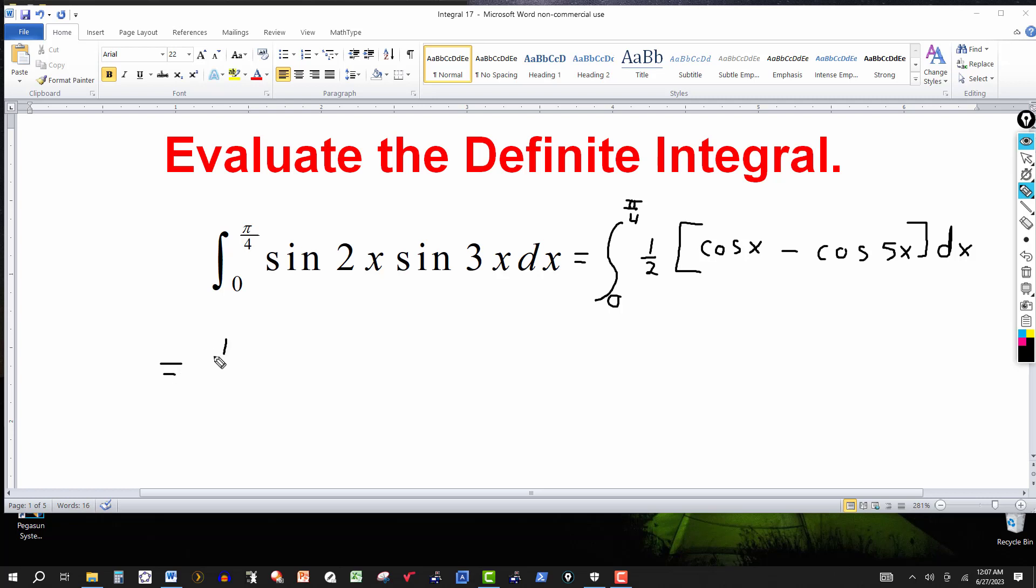Leave the one half there, and then we integrate inside the brackets here. The integral of cosine is sine of x. Same thing with cosine of 5x, it's going to be sine of 5x.